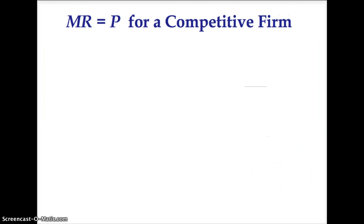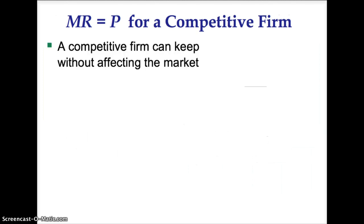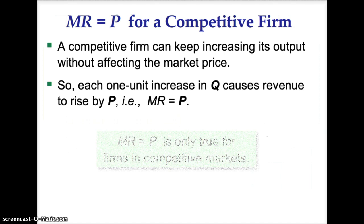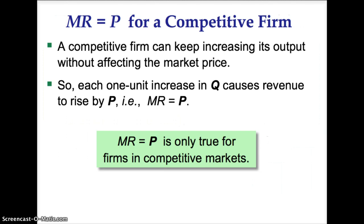Marginal revenue equals price for a competitive firm. A competitive firm can keep increasing its output without affecting the market price. Each one-unit increase in quantity causes revenue to rise by the price. Therefore, the marginal revenue equals the price. This is only true for firms in competitive markets.